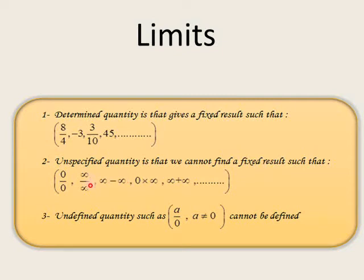The unspecified quantity includes: infinity over infinity, infinity minus infinity, and zero times infinity. Number three: undefined quantity, such as a over zero. Any number divided by zero can't be defined, because no number times zero equals a. Then this quantity — any number divided by zero — is an undefined quantity.